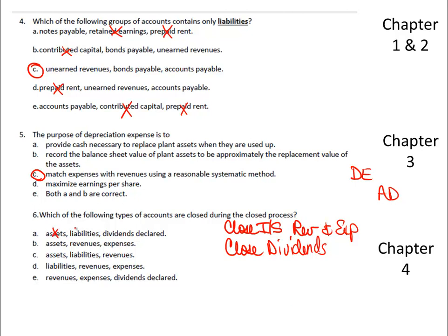we never close assets, and we never close liabilities. So it's not A. It wouldn't be B because we don't close assets. It wouldn't be C because we don't close assets or liabilities. It wouldn't be D because we don't close liabilities. And so E must be the answer.